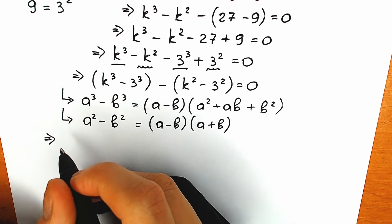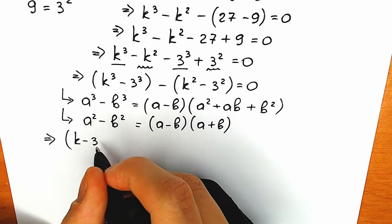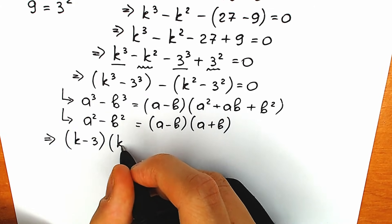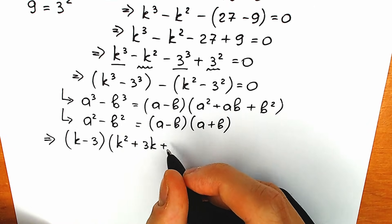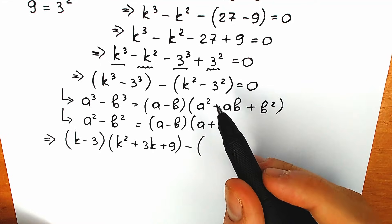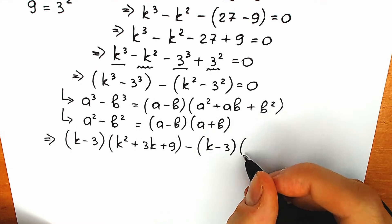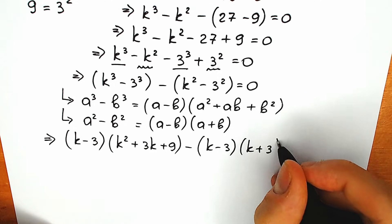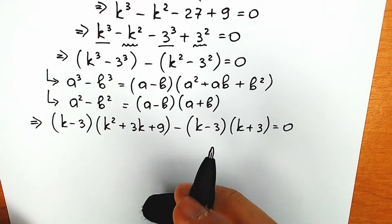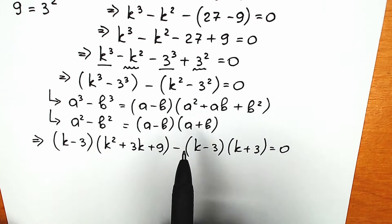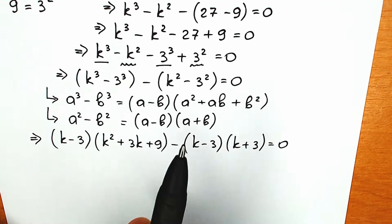Right now let's apply these formulas. We can expand the difference of cubes and the difference of squares using these formulas. Starting on the left side, we have k minus 3 times k squared plus 3k plus 9, and minus the difference of squares: k minus 3 times k plus 3, equal to 0.